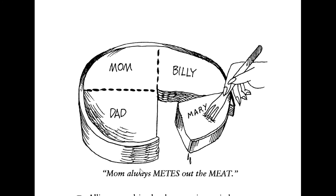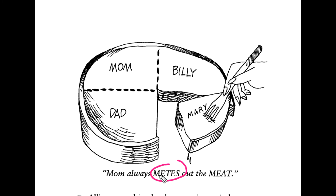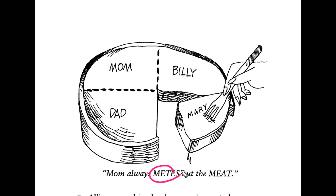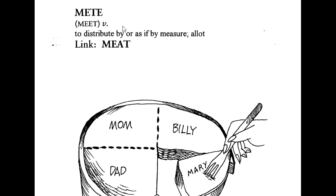So, we have seen the word mete, and we will remember it by the word meat. Mete means meat was distributed among the members. The meaning of the word mete is to distribute — to distribute as if by measure. By measuring, you are distributing something. It is known as mete.